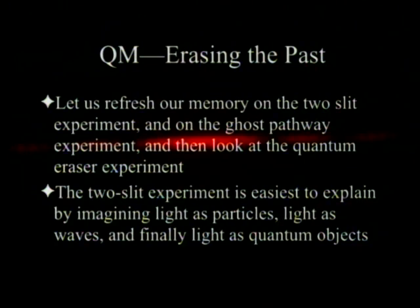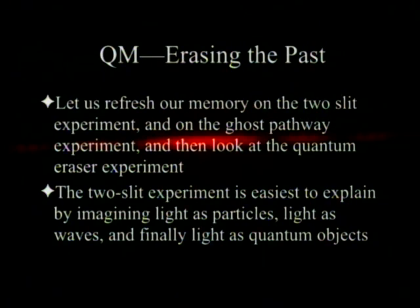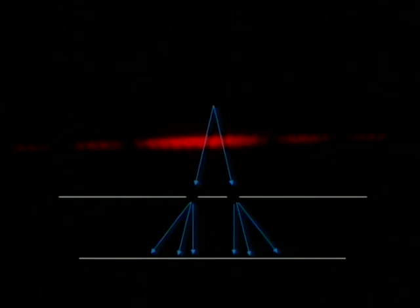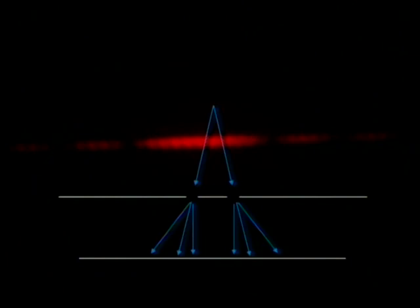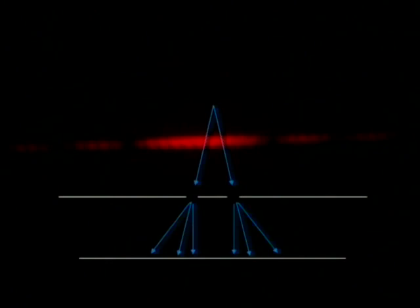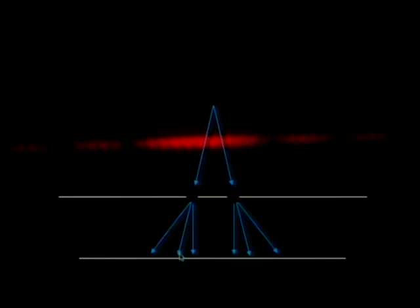The two-slit experiment is easiest to explain by imagining first light as particles, then light as waves, and finally light as quantum objects. For light as particles, we have a light source shooting light at two different slits. The light hits the slits. There's a little bouncing around of particles that hit the edges, so they are not precisely correlated, but enough go through so that the major points of light are in the area directly angled out from the light source.